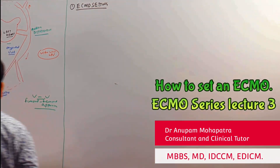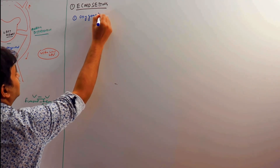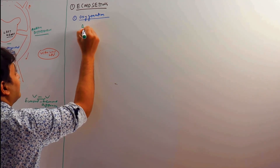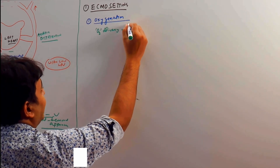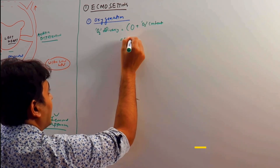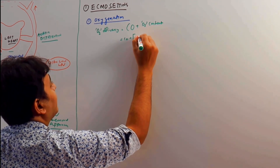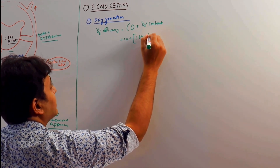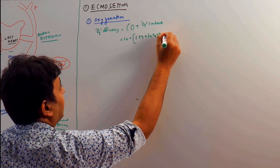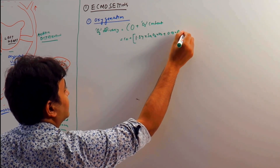In ECMO, we have three functions. Number one is oxygenation — how to set our ECMO so that oxygenation is maximum. The oxygen delivery formula is cardiac output multiplied by oxygen content of the blood: 1.34 into saturation of arterial oxygen into hemoglobin, plus 0.03 into partial pressure of oxygen.